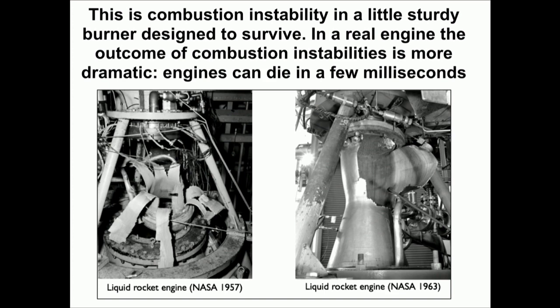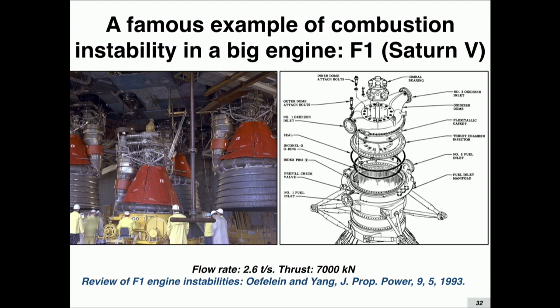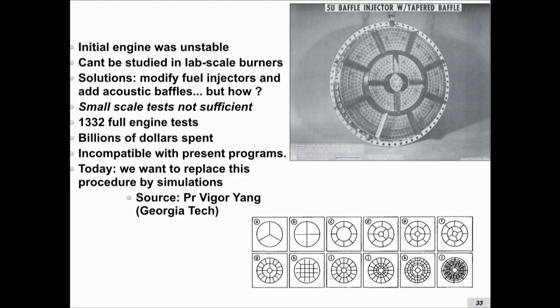For rocket engines, this instability is extremely sensitive and causes the death of the engine. The most famous example is the Apollo program. At that time, they had very big rockets with five F1 engines. These engines were taken from a smaller engine and just made bigger. When they started operating, it exploded right away. They tried again and it exploded again. Then they started working on the problem and it took more than 1,000 full engine tests over two years to fix it, just by trial and error — adding baffles, changing injectors — until they found something which was not too noisy.